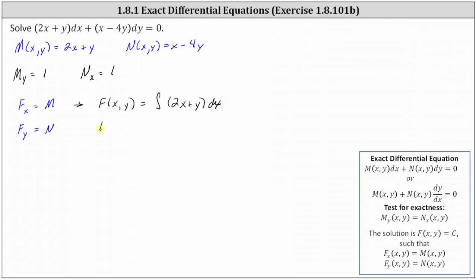This indicates that F(x, y) is equal to 2 times x squared divided by 2, or x squared, and then plus xy, and then plus a function of y.